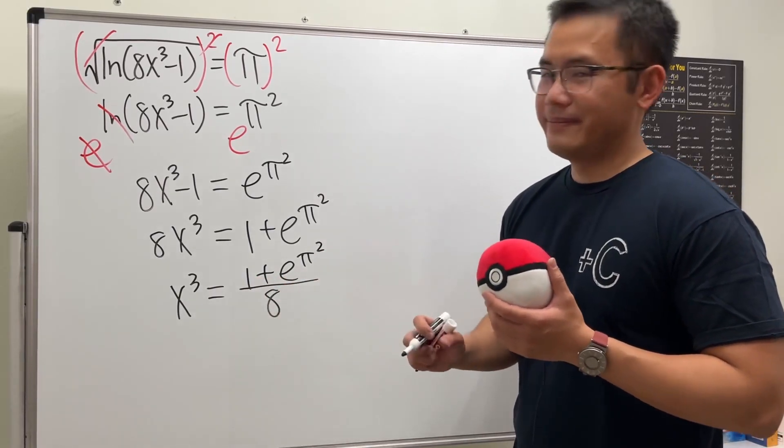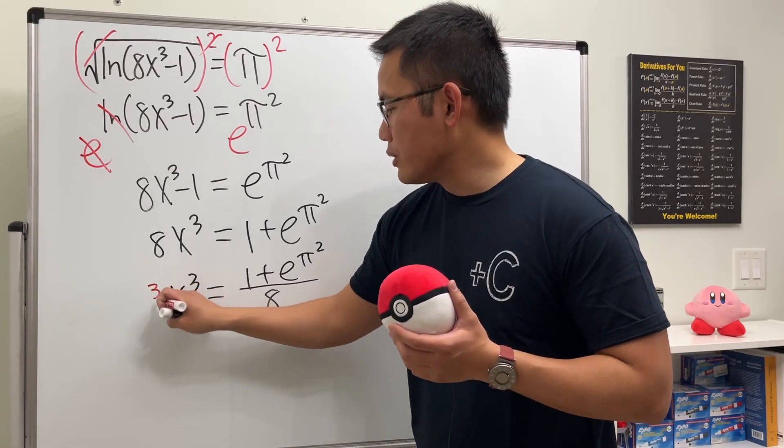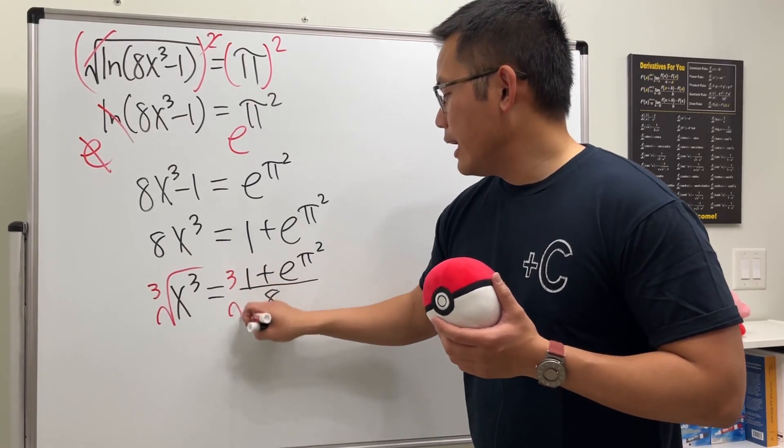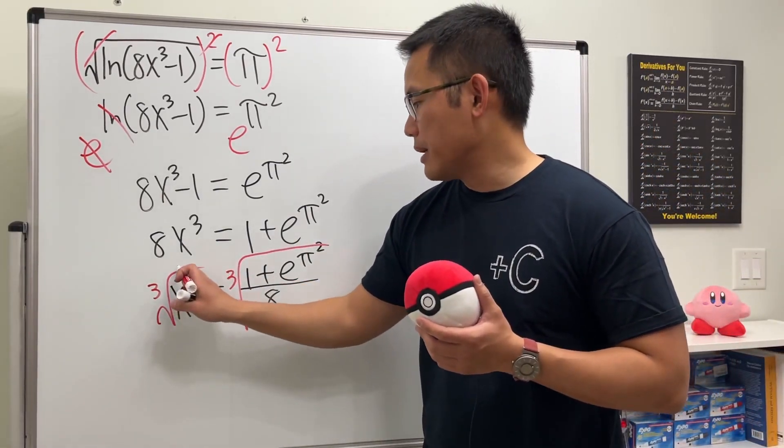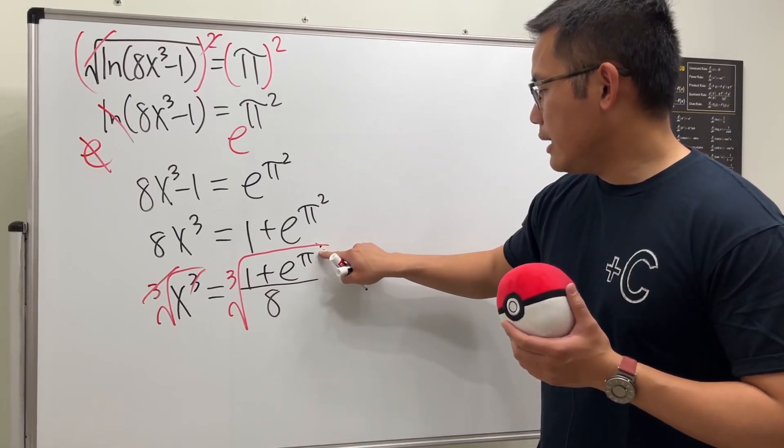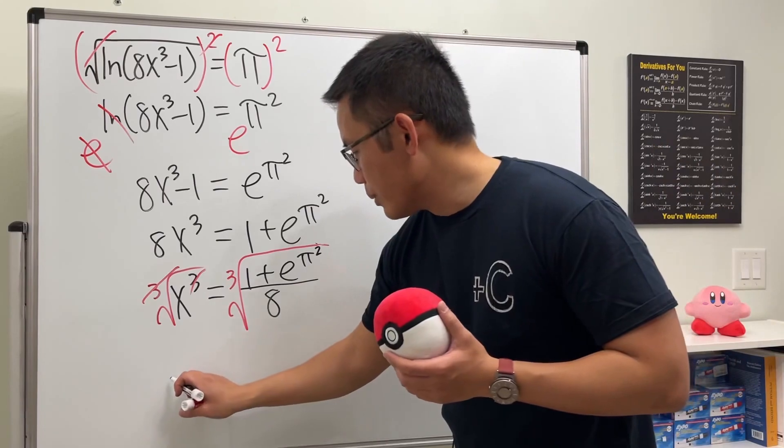Lastly, to get rid of the third power, we can just take the cube root on both sides. And when we take the cube root on both sides, we do not have to put a plus minus—keep that in mind. And this and that cancel, and I'm just going to do the following: x will be by itself.